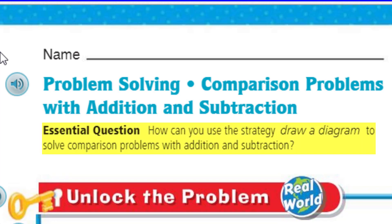But we do have our essential question. Our essential question, our purpose — this is why we do math because this is what's going to drive this lesson. It says: how can you use the strategy draw a diagram to solve comparison problems with addition and subtraction? So we're going to be doing a problem where we're going to need the strategy draw a diagram. That's in the forefront of my mind. But of course, we need to unlock the problem.